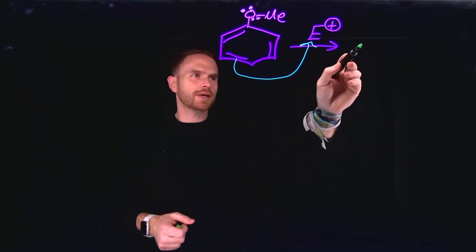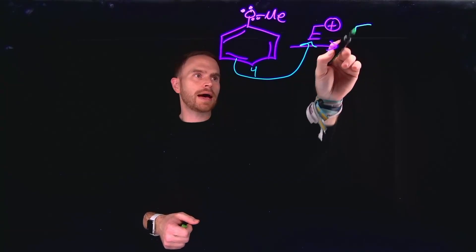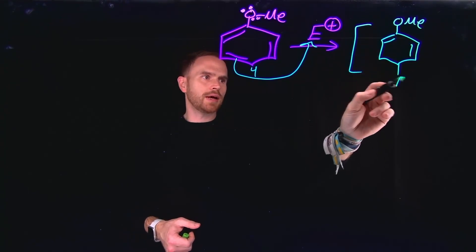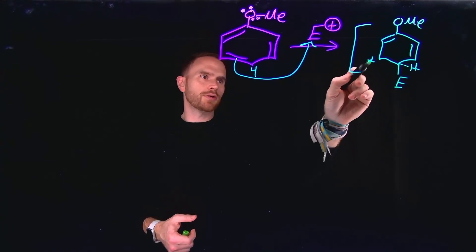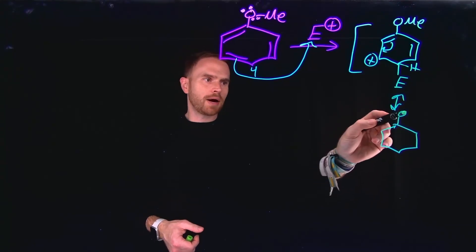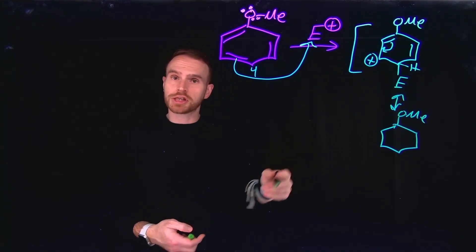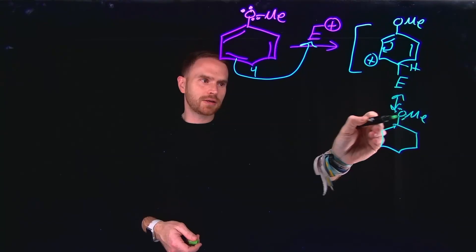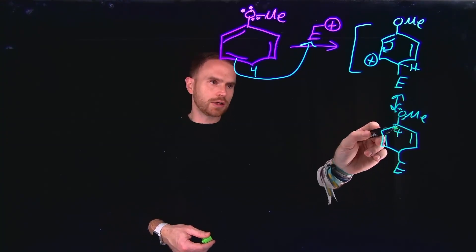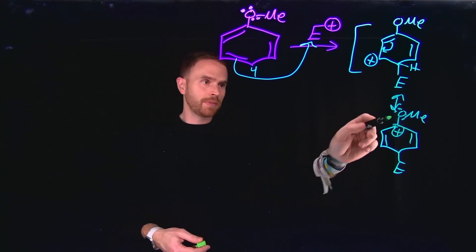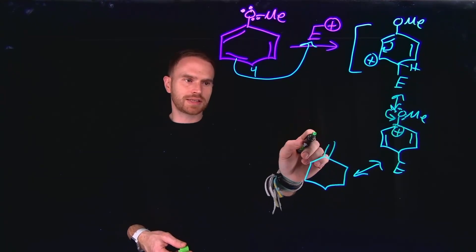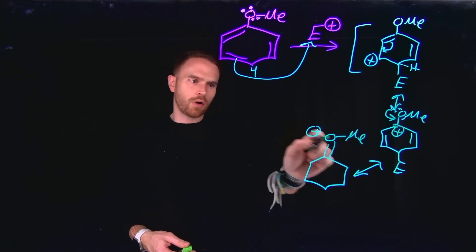For para substitution practice, we draw electrophilic aromatic substitution occurring at the 4 position, generating several resonance structures. A methoxy group has pi electrons that can donate into the aromatic ring to help stabilize the structure. One resonance structure contains a carbocation at the methoxy position, and the lone pair electrons on oxygen can donate down to stabilize this carbocation, generating a new structure with a positive charge at the oxygen portion of the methoxy group.